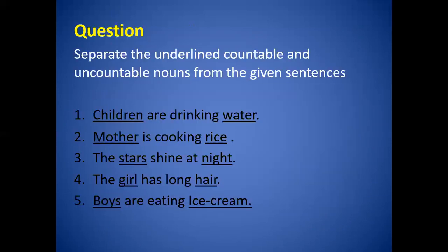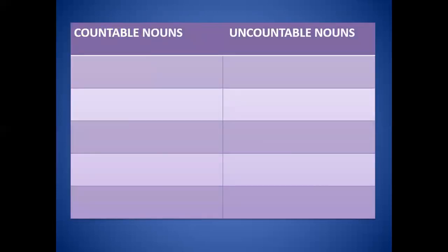Now come to the activities. Question number one: separate the underlined countable and uncountable nouns from the given sentences. You have to separate them — countable ke column mein countable nouns likhne hain aur uncountable ke column mein uncountable likhne hain. Like: 'Children are drinking water' — you can count children, so this is countable; water is uncountable. 'Mother is cooking rice' — we can count mother but we cannot count rice. 'The stars shine at night' — we can count stars but we cannot count night. 'The girl has long hair' — we can count girls but we cannot count hair. 'Boys are eating ice cream' — you can count boys but you cannot count ice cream. Here I have made the answers for you.